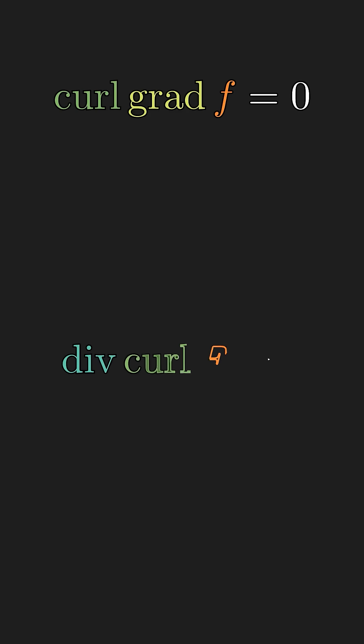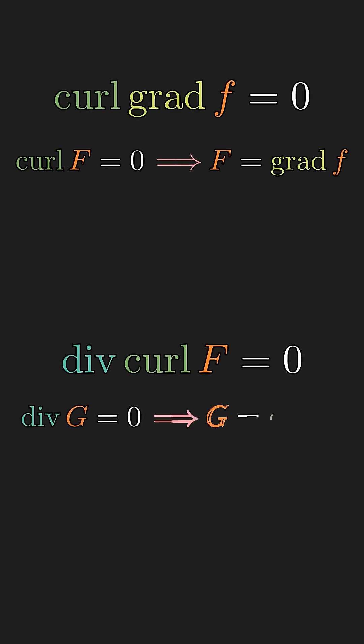Now, over any three-dimensional space, the curl of gradient and the divergence of curl are always equal to zero. A more interesting question is whether, if the curl of a function is zero, it must be the gradient of another function, and whether, if the divergence of a function is zero, it must be the curl of another function.